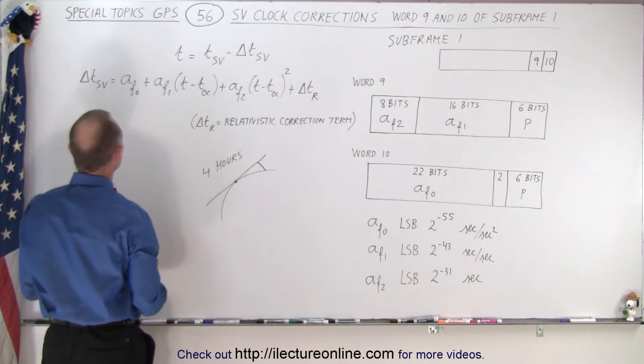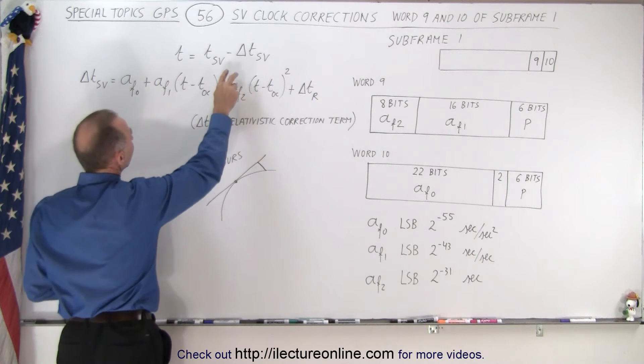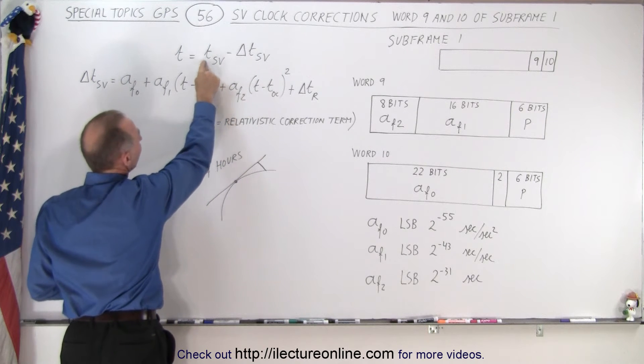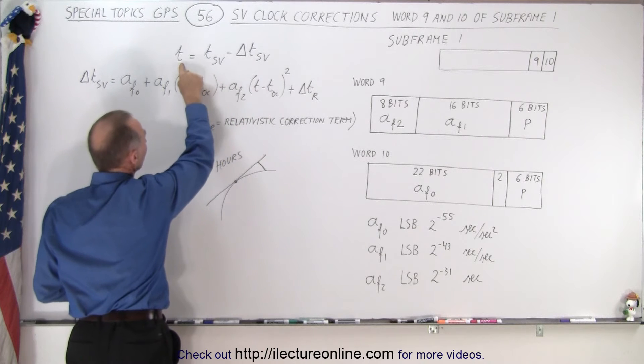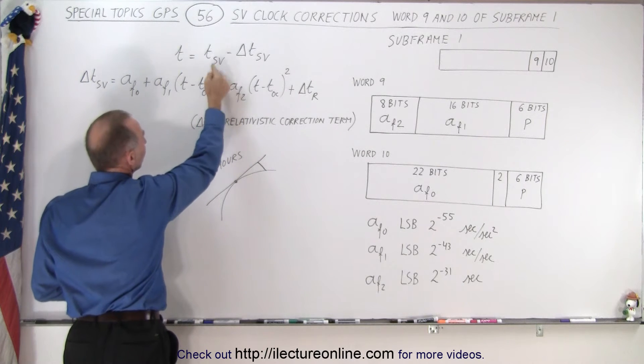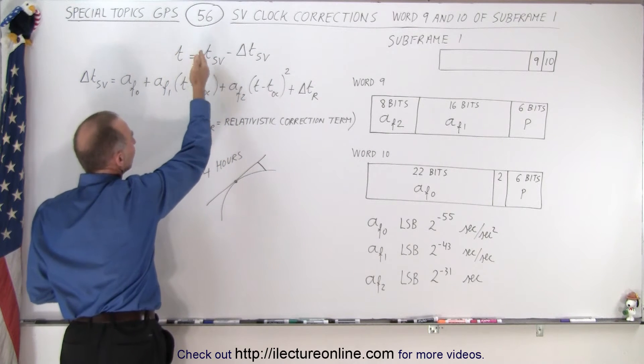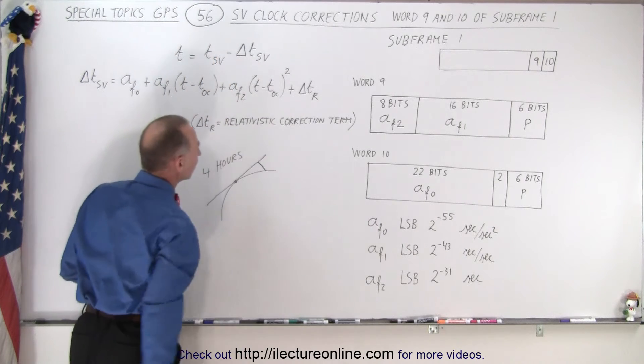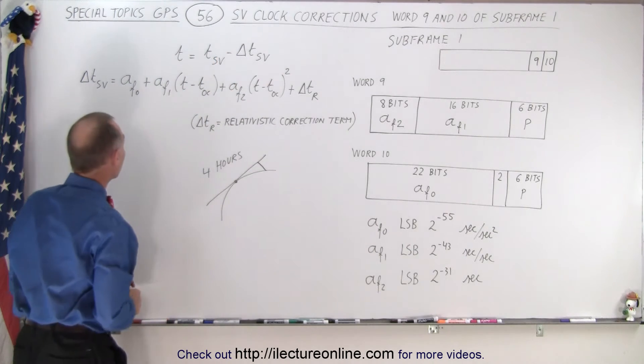So what does the equation look like? Well we're trying to find the difference between the SV time. The true time would be the SV time, or the adapted time I should say, is the SV time minus the delta SV. And how do we calculate the delta SV?